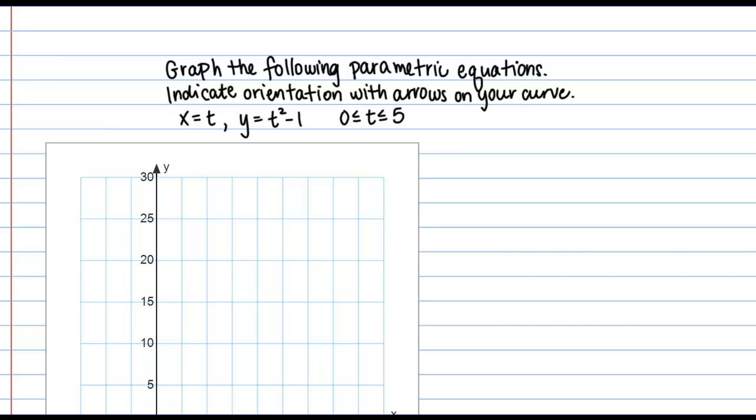So when you're graphing a set of parametric equations, it can often be helpful to create a table of values. So let's do that in this case. So I'm interested in t values between 0 and 5. And what I'm going to do is I am just going to take those t values and plug them into these two parametric equations. And that will give me my x and y values respectively.